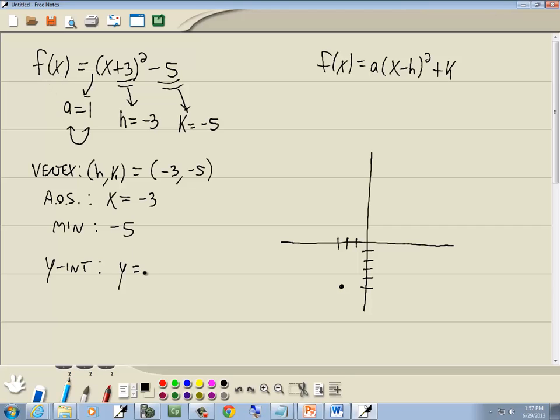F of x is equal to y, so I put y down. And to find a y-intercept, you put 0 in for x. You always put 0 in for the other variable. So this would be 0 plus 3 squared minus 5. Well, 0 drops away. 3 squared is 9. 9 minus 5 gives us 4. So our y-intercept is at 4.